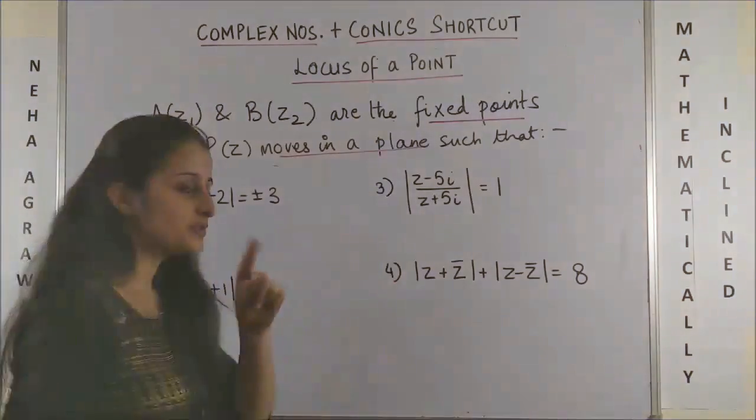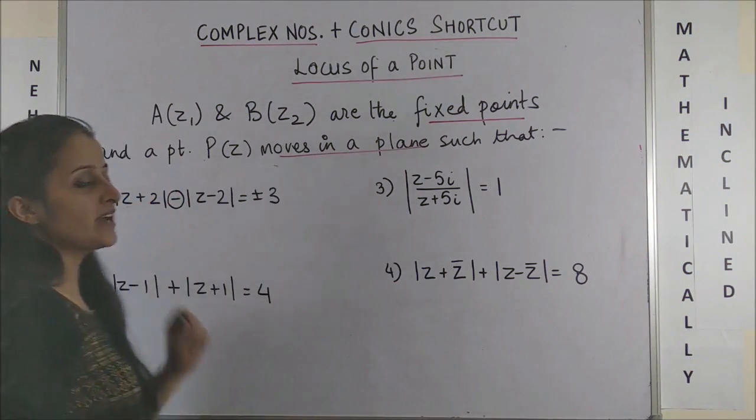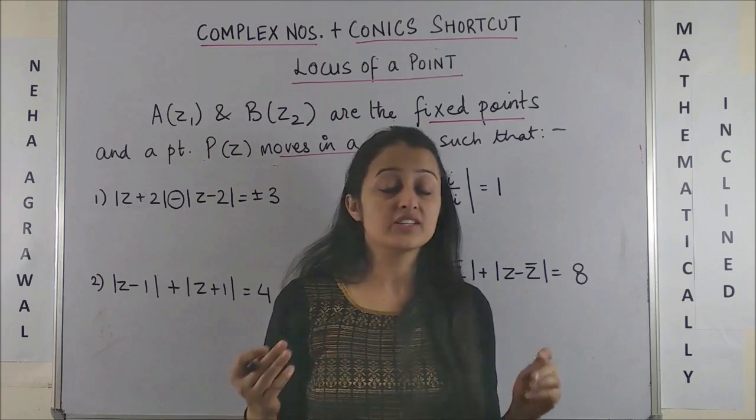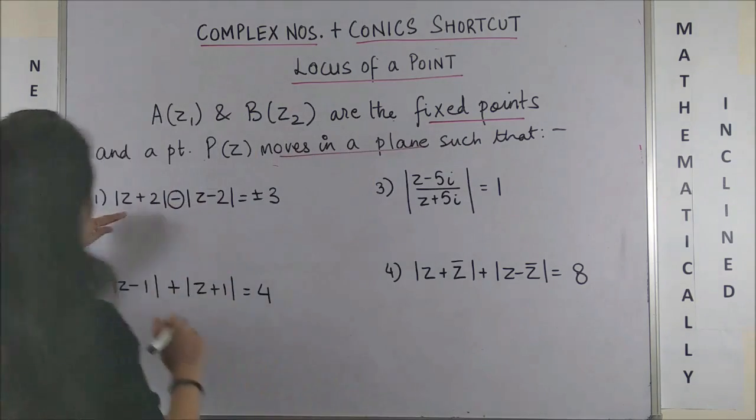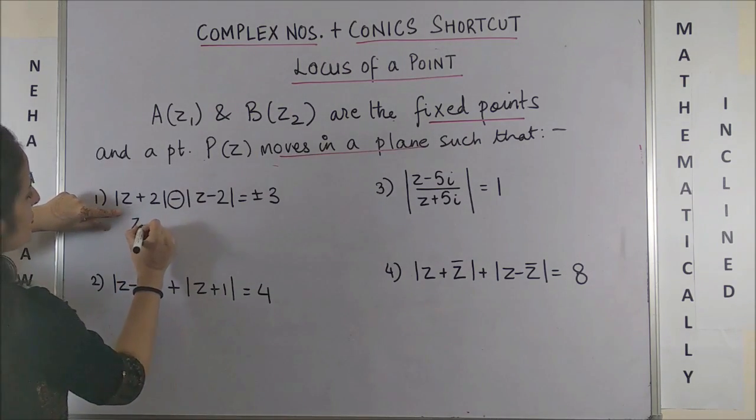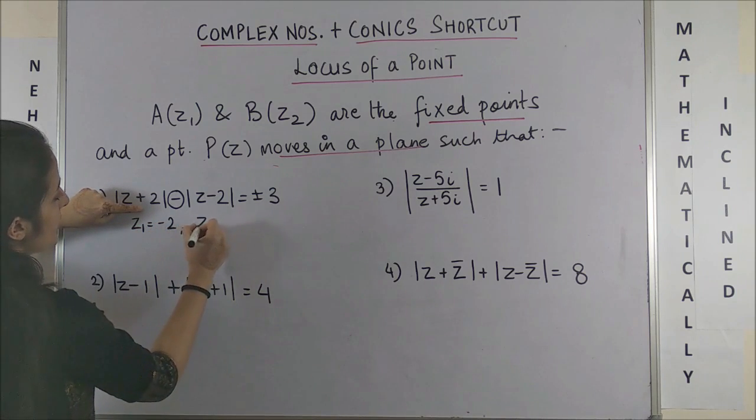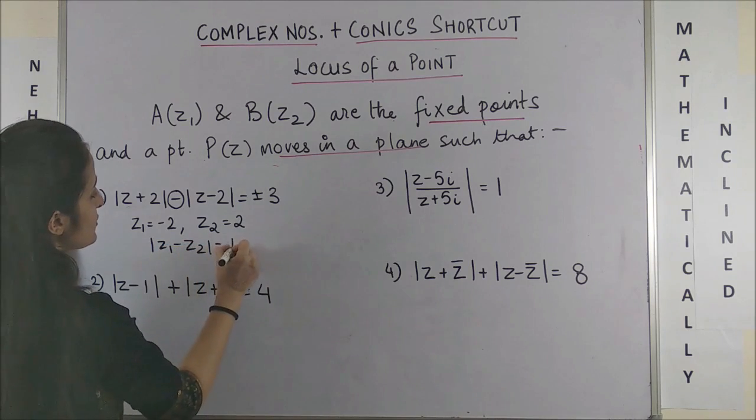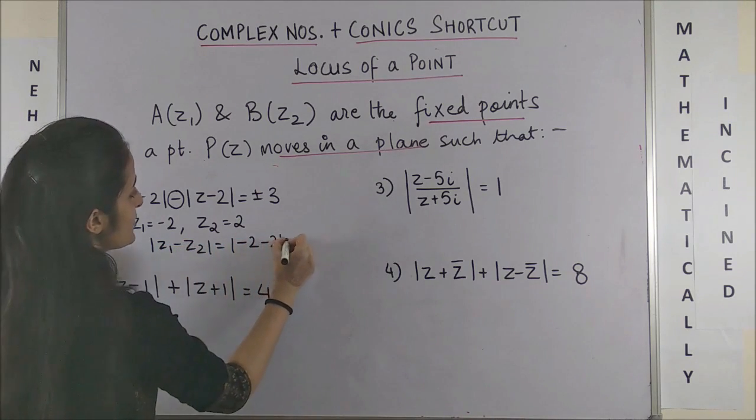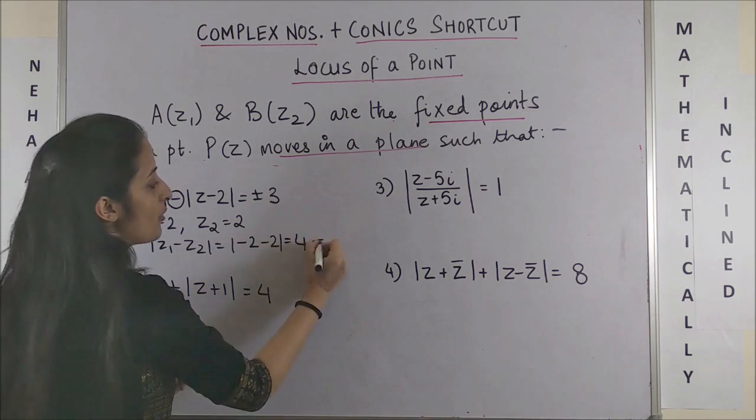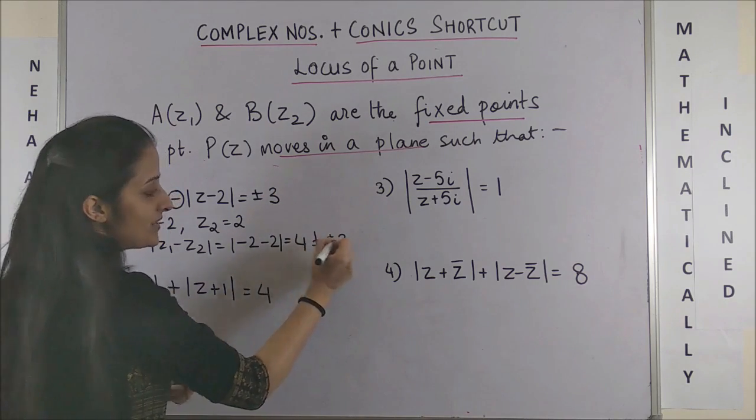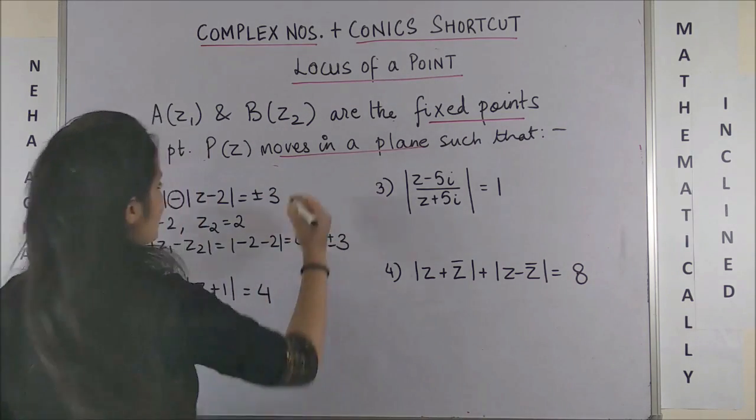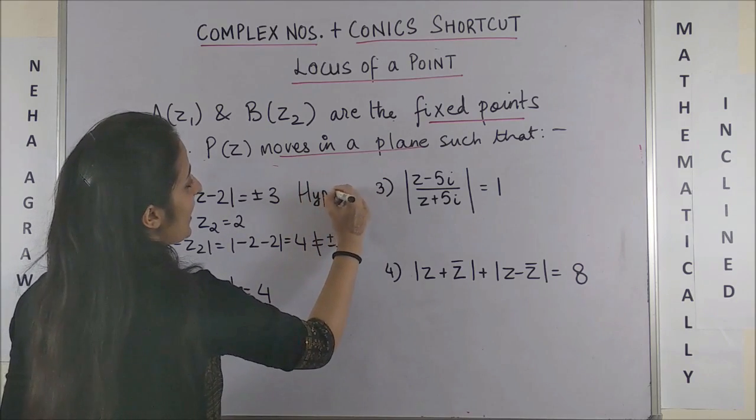When you look at the first question, since there's a negative sign in between, the first expectation is it could be a hyperbola. If you realize the form, your Z₁ is -2 and your Z₂ is +2, |z₁-z₂| = |-2-2| which is going to be 4 and not equal to any of your ±3. Yes, your answer was rather a hyperbola.